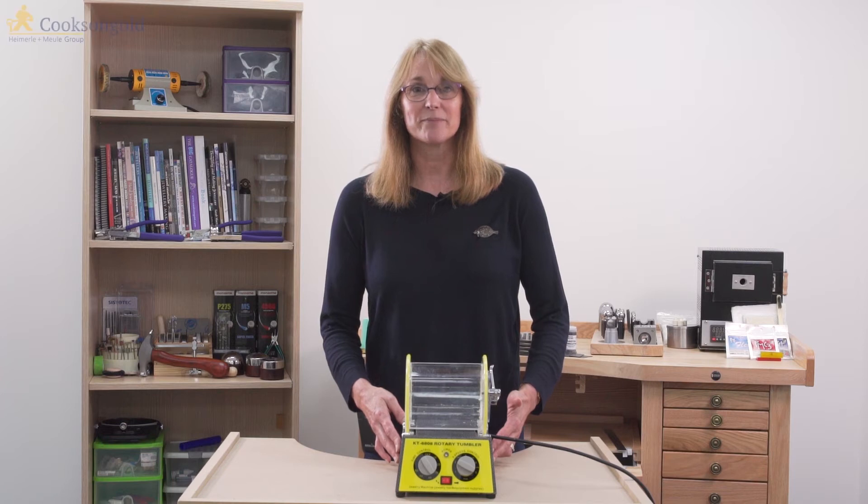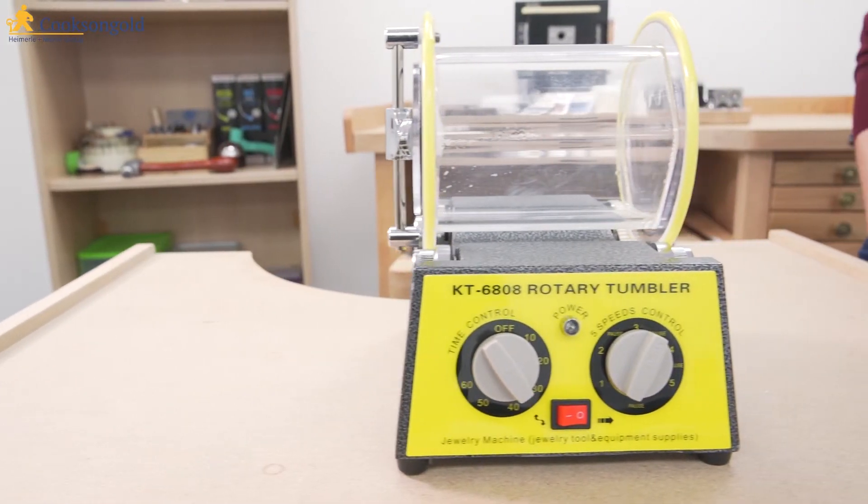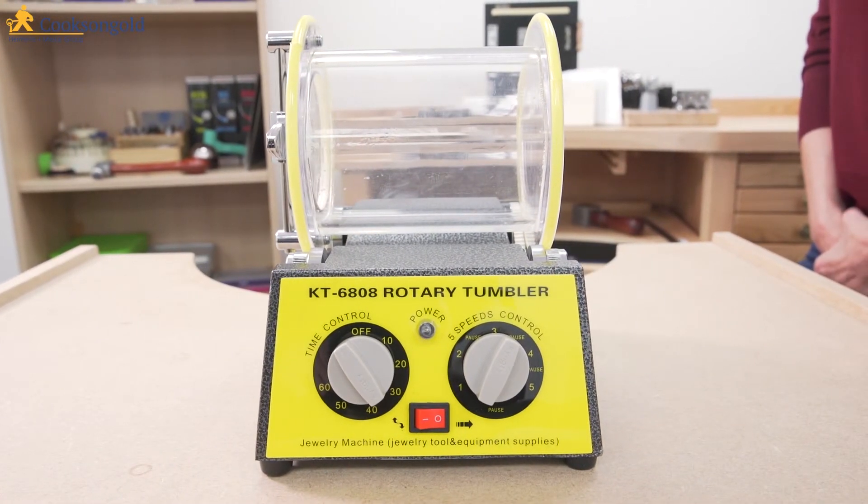Here we have the jeweller's barreling machine. It has a six-sided transparent barrel and it's capable of holding a kilogram of shot.